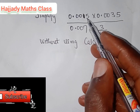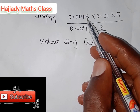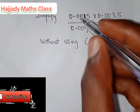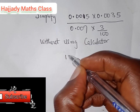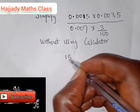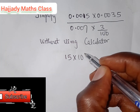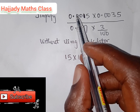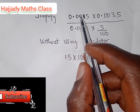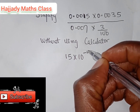0.0015 in standard form — it can be expressed in standard form to the base 10. This can be changed to 15 times 10 raised to the power minus... how many digits do we have after our decimal point? Let's count: 1, 2, 3, 4. Raised to the power minus 4.